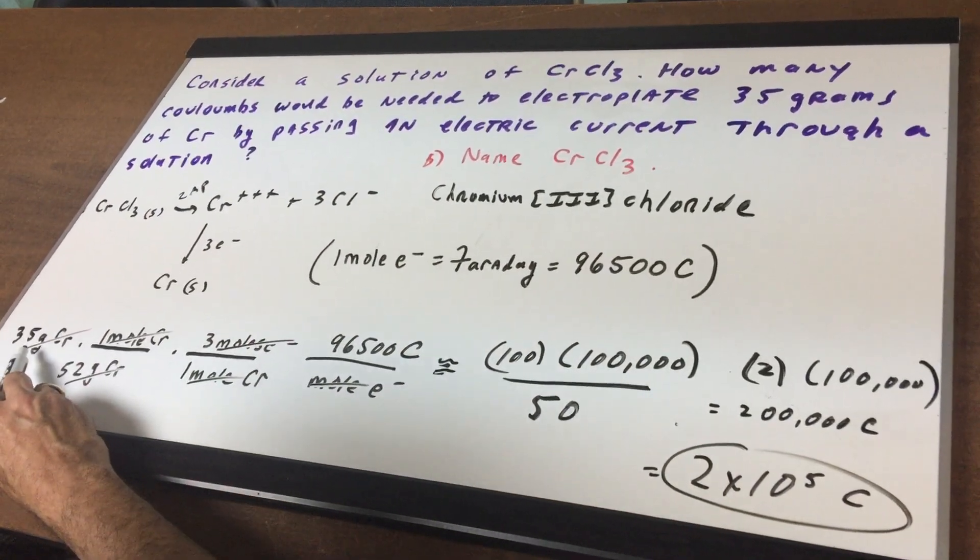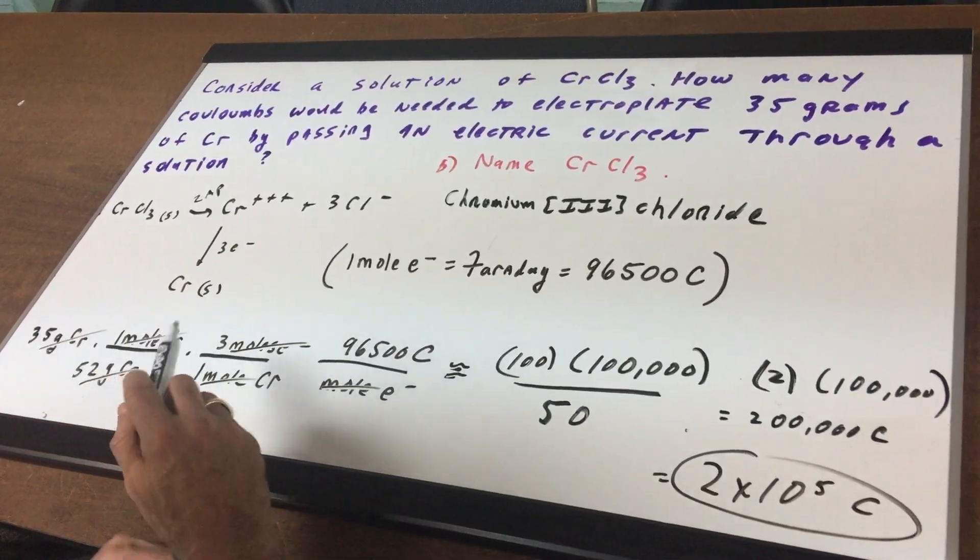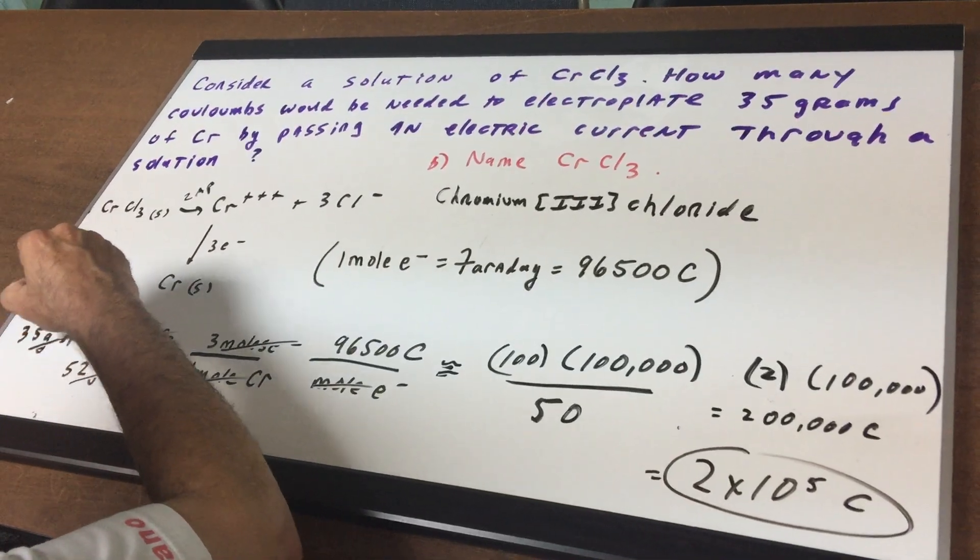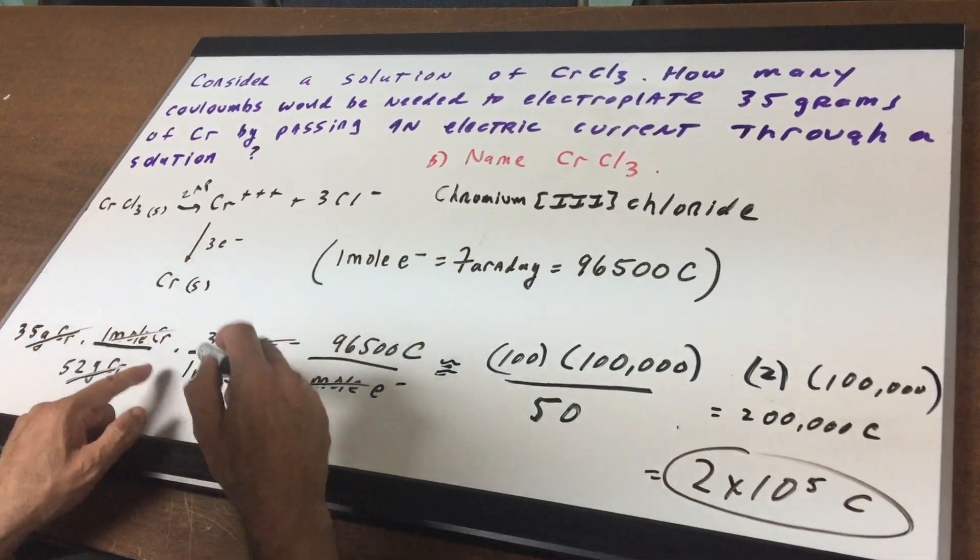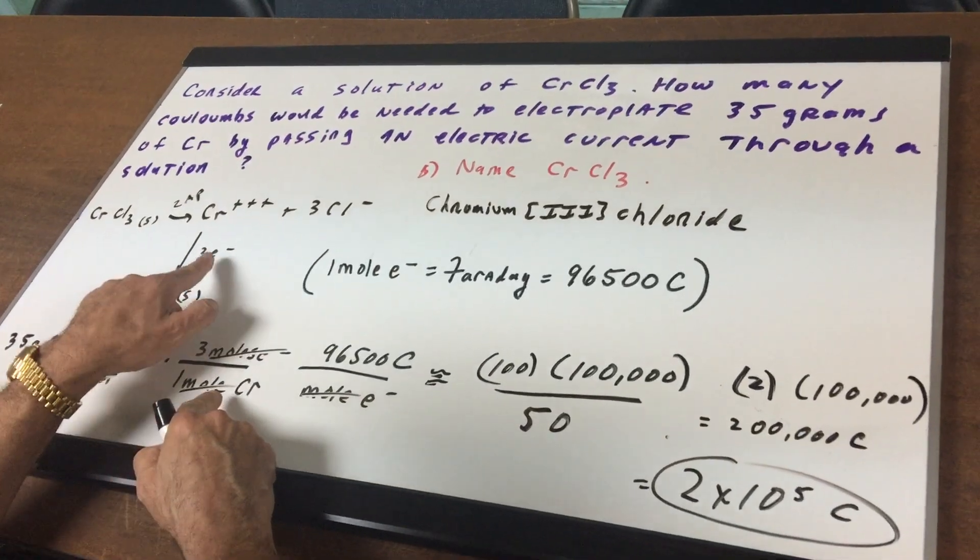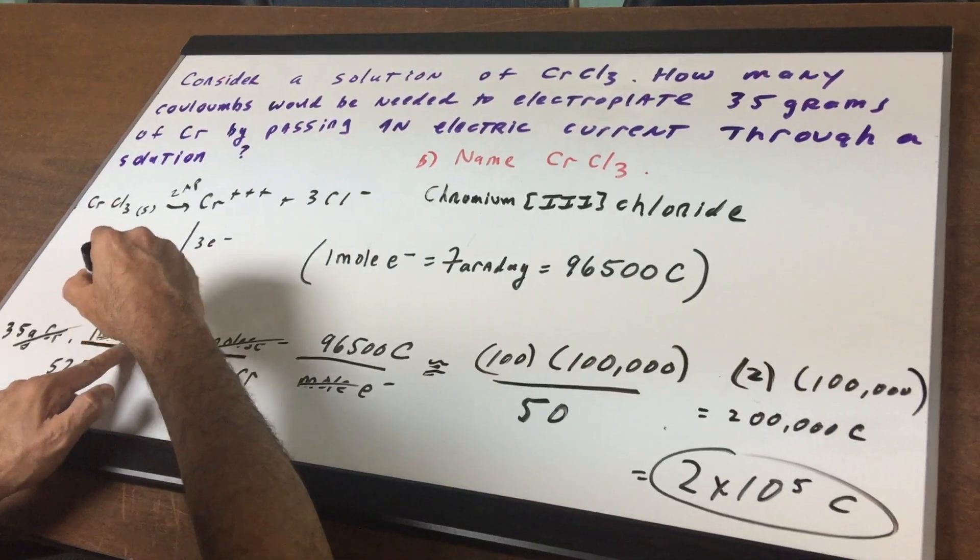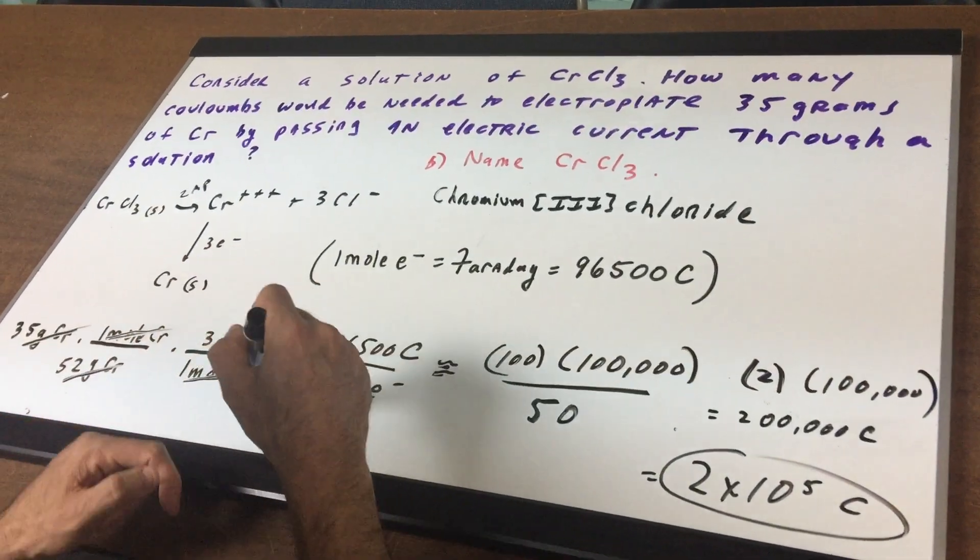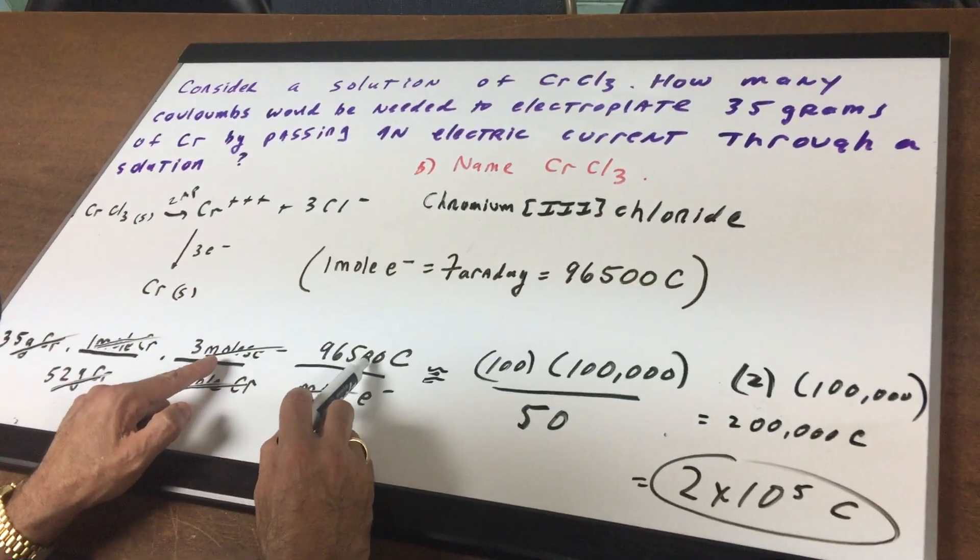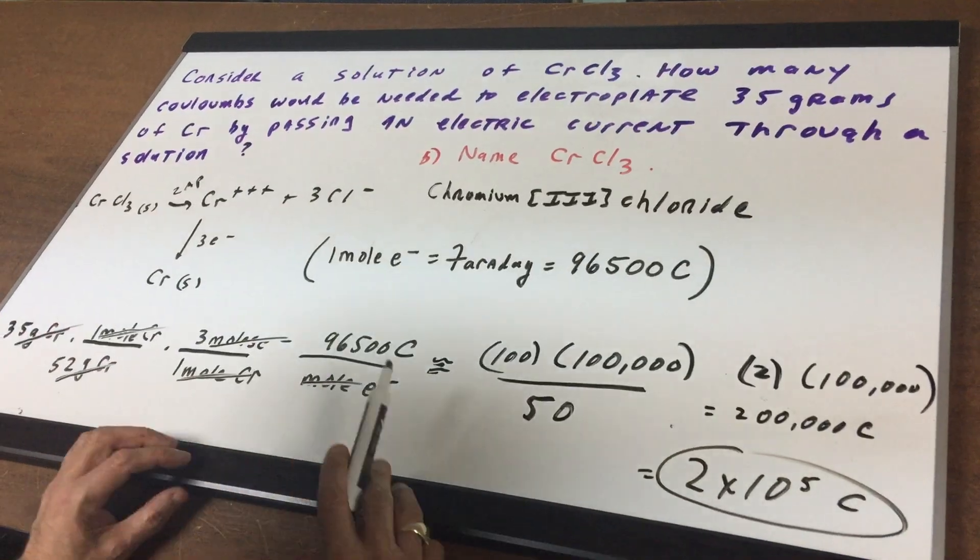We're going to start with the given. There's 35 grams and we're going to first convert it into moles. So one mole of chromium is 52 grams, and that will cancel out grams. Then you have a mole of chromium here, and here's the conversion factor. There's 3 moles of electrons for every mole of chromium, and that would cross out mole of chromium. And then finally, 96,500 coulombs per mole, and moles cancel out and we're left with coulombs.